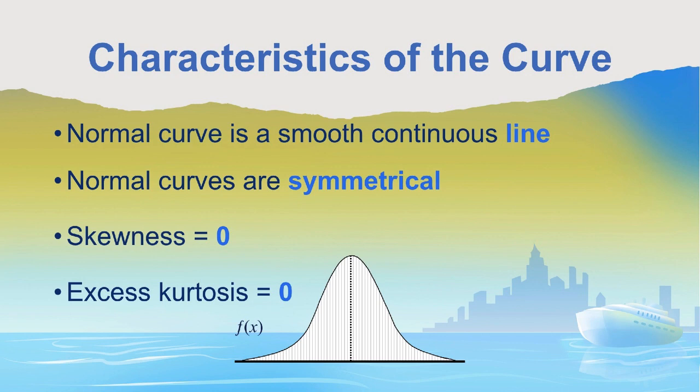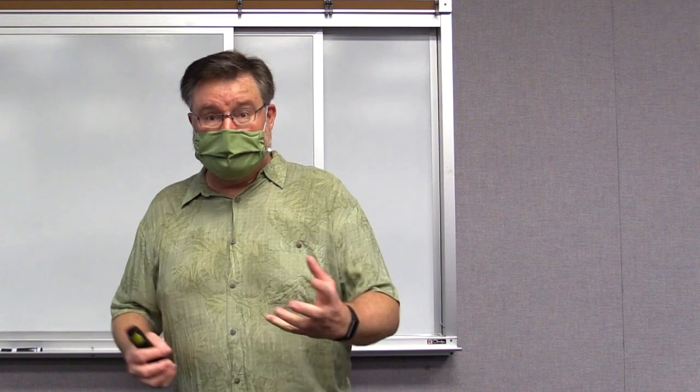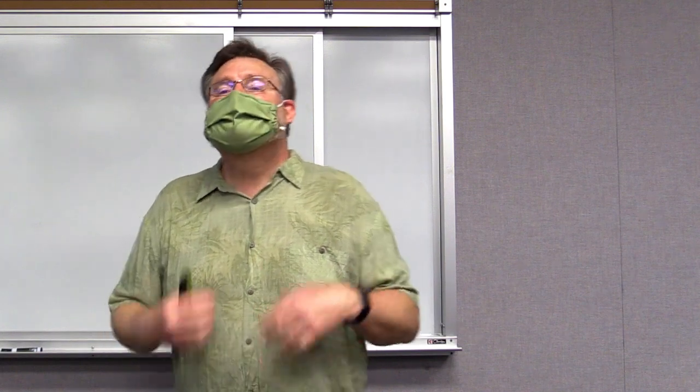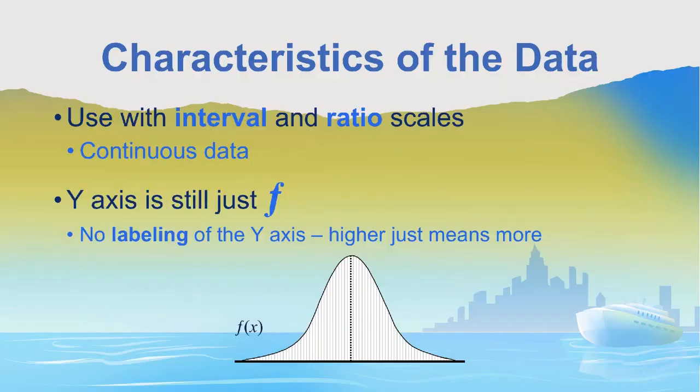We will use a normal distribution with interval or ratio level continuous data. So this would not be a discrete distribution — it is a continuous distribution with continuous data for a normal curve.